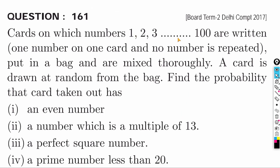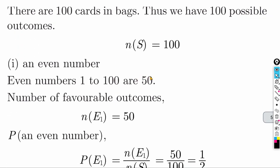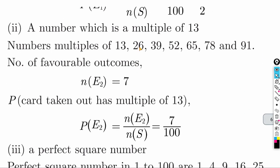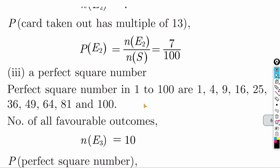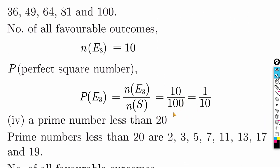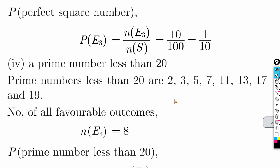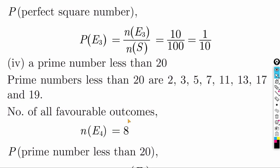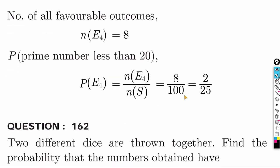Cards numbered 1 to 100 are written, one number per card. Find probability of an even number: there are 50 even numbers from 1 to 100. Answer = 50 by 100. Find probability of a multiple of 13: multiples are 13, 26, 39, 52, 65, 78, 91 — total 7. Answer = 7 by 100. Find probability of a perfect square: 1², 2², ..., 10² — total 10. Answer = 10 by 100. Find probability of a prime number less than 20: primes are 2, 3, 5, 7, 11, 13, 17, 19 — total 8. Answer = 8 by 100 = 2 by 25.